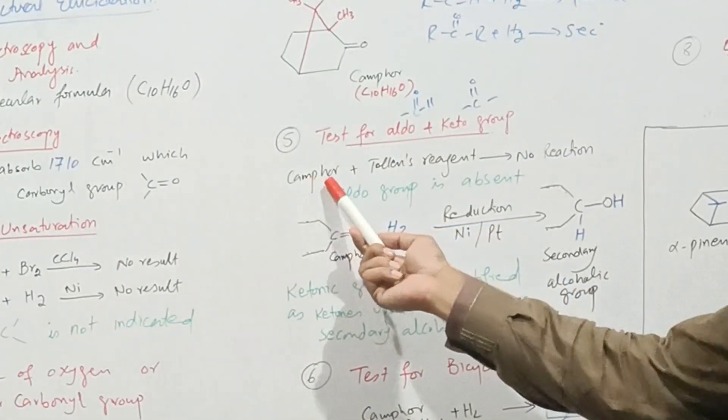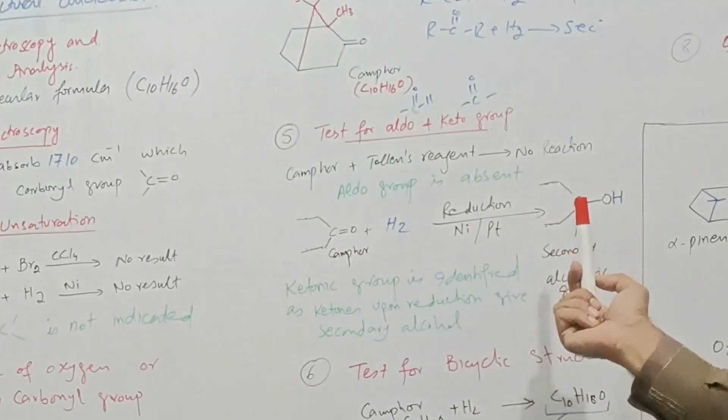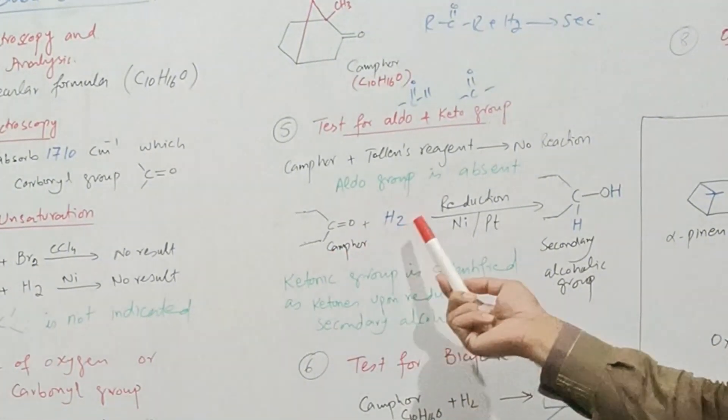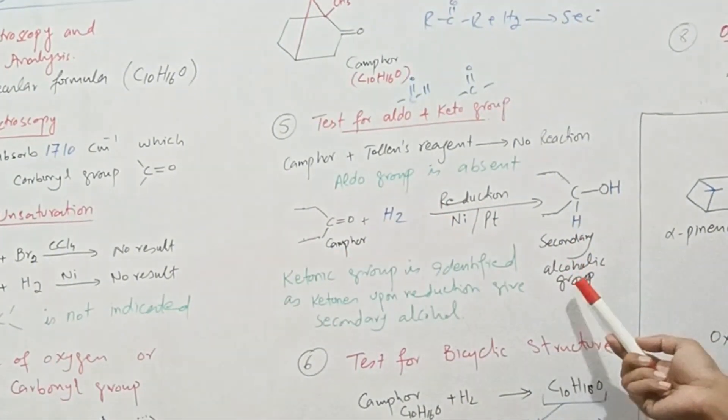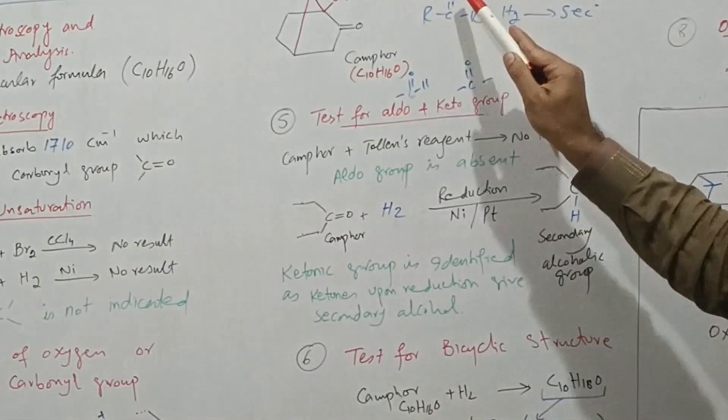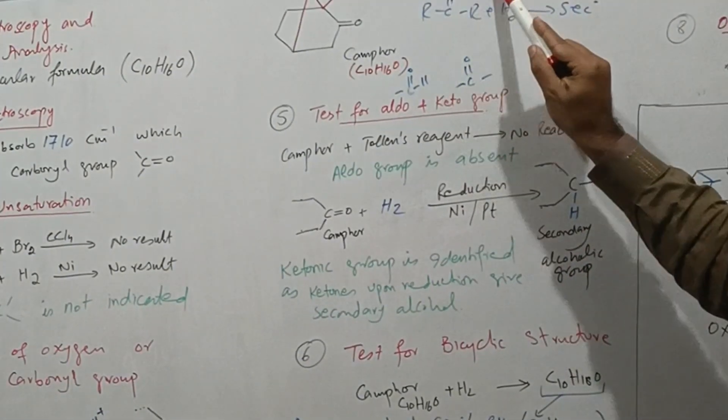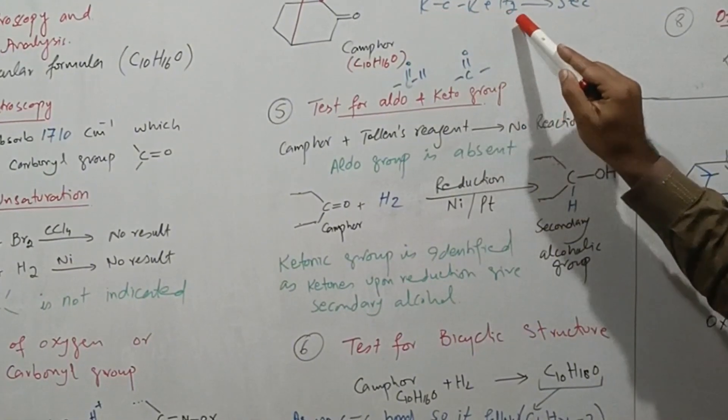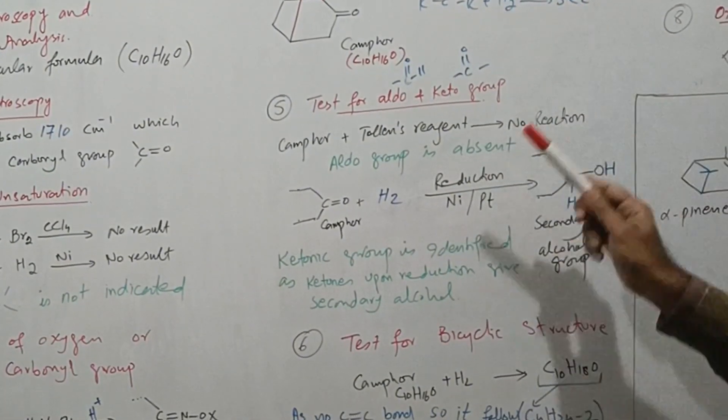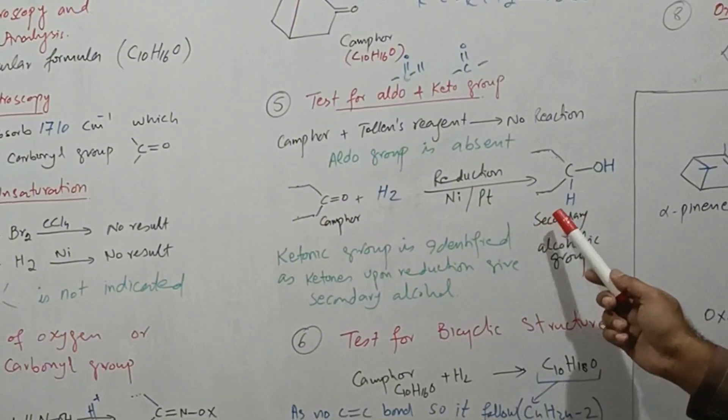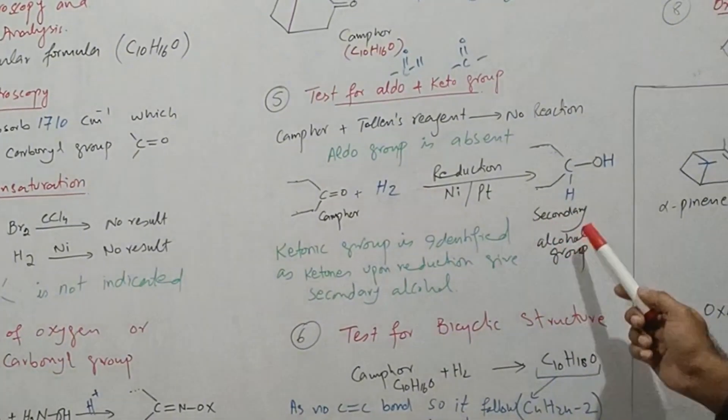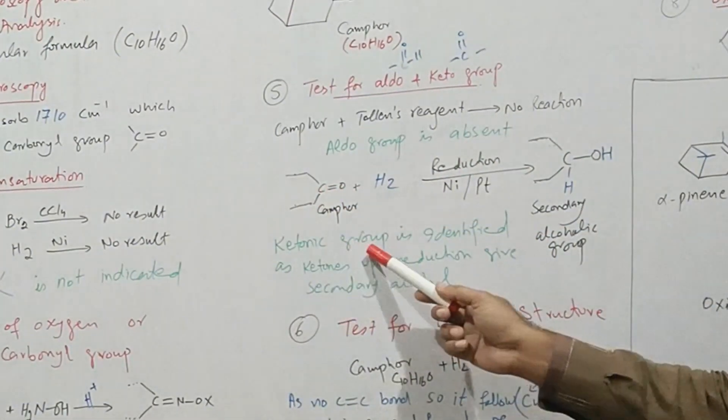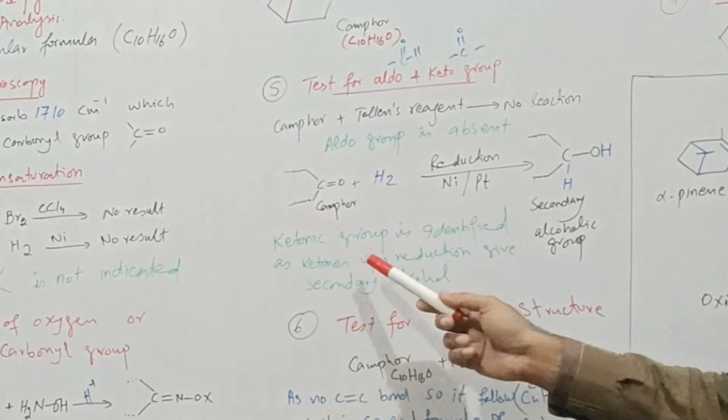When camphor is treated with hydrogen, then secondary alcoholic group is obtained. In previous classes we have studied that aldehyde upon reduction gives primary alcohol and ketone upon reduction gives secondary alcohol. So formation of secondary alcoholic group shows that the camphor contains ketonic group. Ketonic group is identified as ketones upon reduction give secondary alcohol.